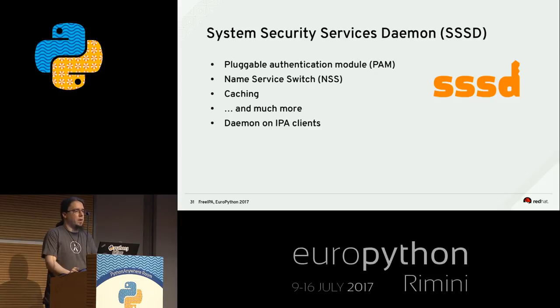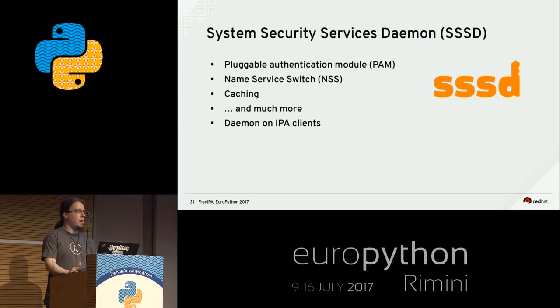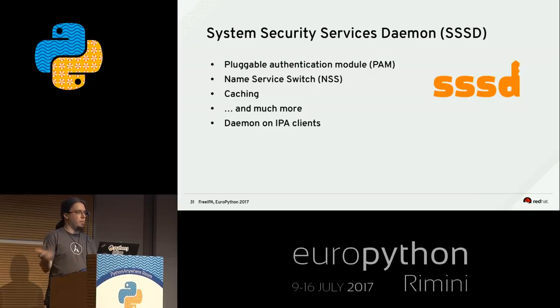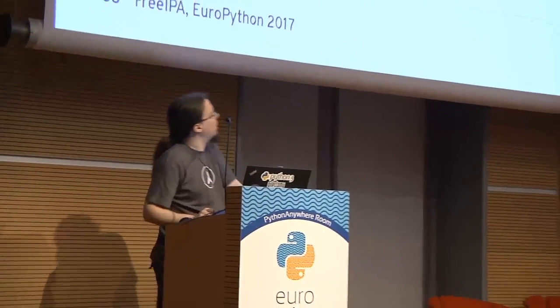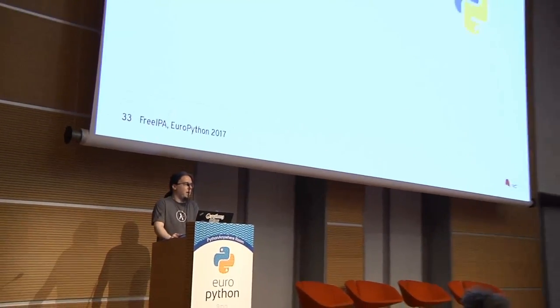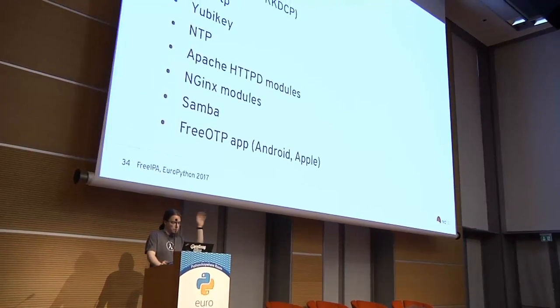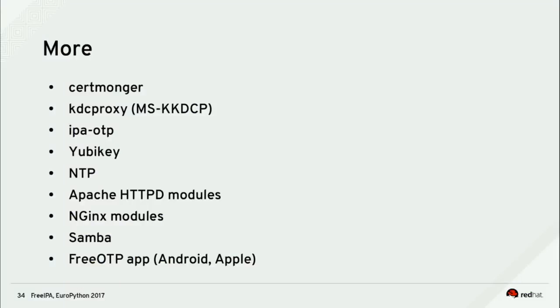SSSD is a daemon running on all your machines — even clients. It hooks into PAM (which handles login authentication for Linux console, KDE, GNOME, SSH) and NSS (the name service, providing username lookups, group membership, NFS UID/GID mappings). It also does caching. The user interface and management tools, including installers, are all written in Python. OTP support includes YubiKey, Android and Apple OTP apps, using SHA-256 TOTP.